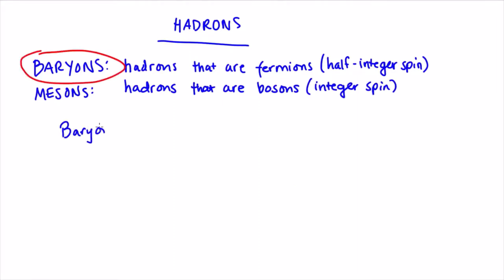We know some baryons already. The proton and the neutron are good examples, and as it turns out, the proton is the lightest baryon out there.